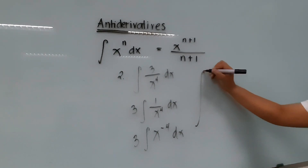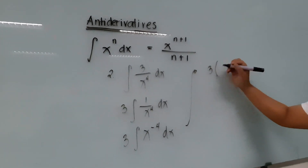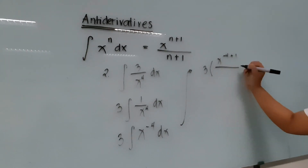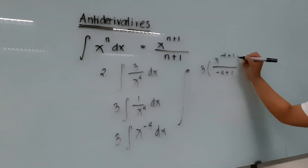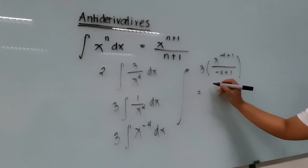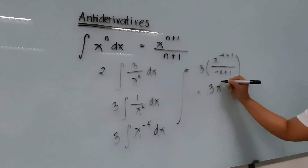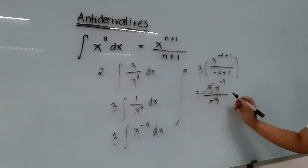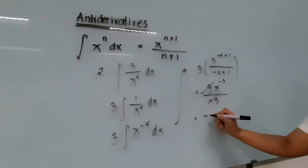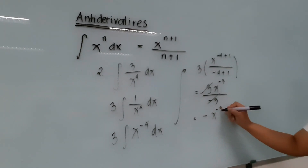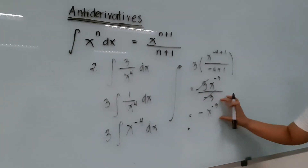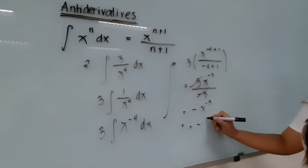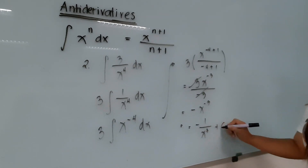Integrating, we have 3 multiplied by x raised to negative 4 plus 1, over negative 4 plus 1. Simplifying, this gives 3x raised to negative 3, over negative 3. Dividing 3 by negative 3 gives negative 1, so we have negative x raised to negative 3. Taking the reciprocal, the final answer is negative 1 over x cubed, plus C.